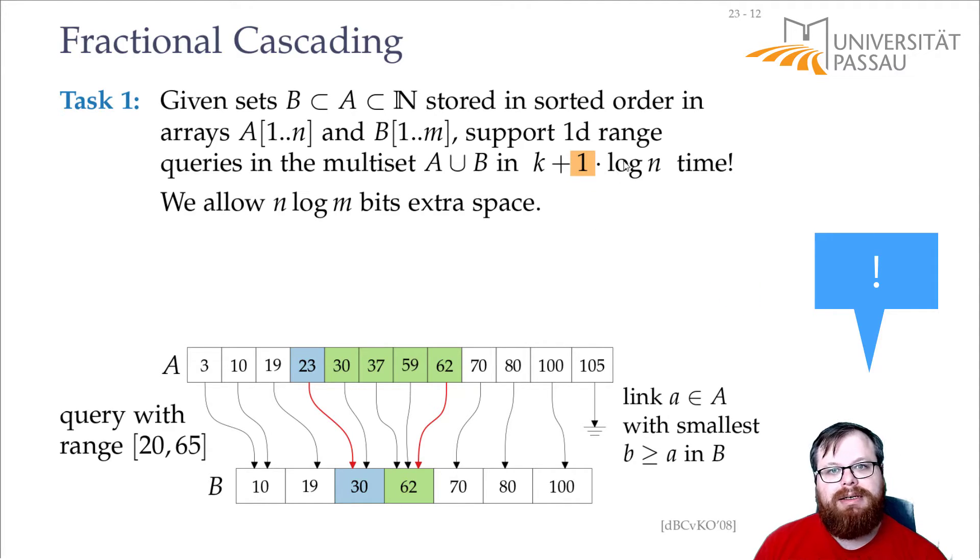So, the difference here to what we would usually do is that we only do one binary search. Only do one binary search in A. We don't have to look for the number 30 in B again, because we can directly take this pointer. Otherwise, if we had to do another binary search, then the running time would be k plus log n plus log m, which is too slow for us.